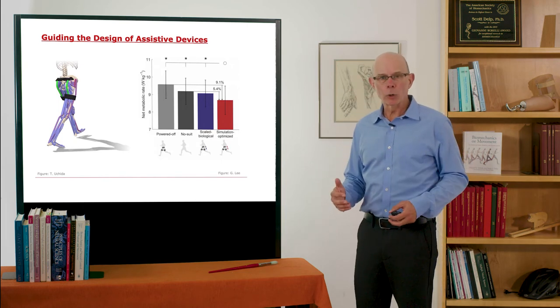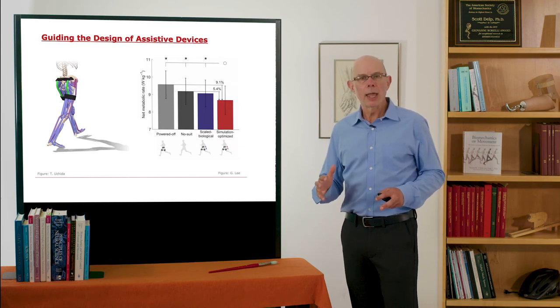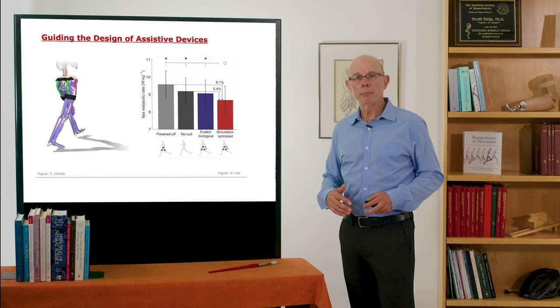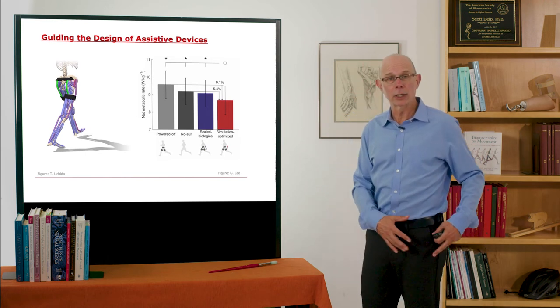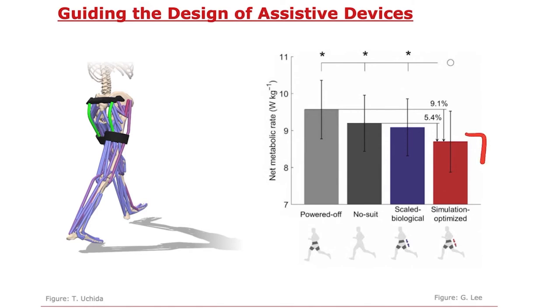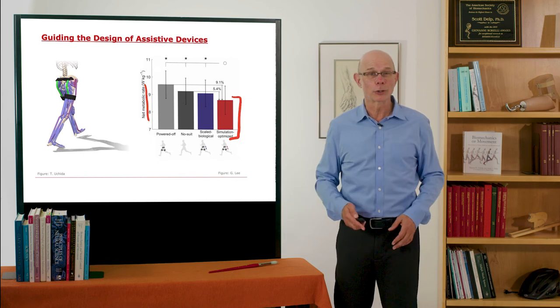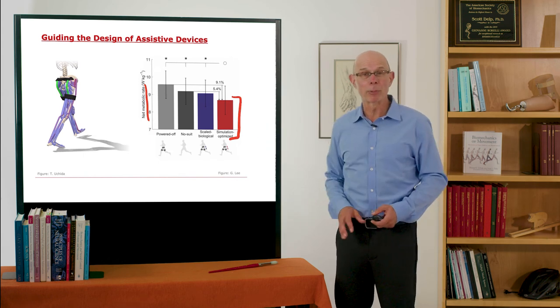A fantastic group in Connor Walsh's lab at Harvard built those beautiful devices and actuated the exoskeleton according to Tom's simulation, and that's what's shown in red. They got the greatest savings in metabolic cost using the actuation control scheme that was predicted in the simulation. Remember I talked about simulating real-world situations? Here's a great example of that.